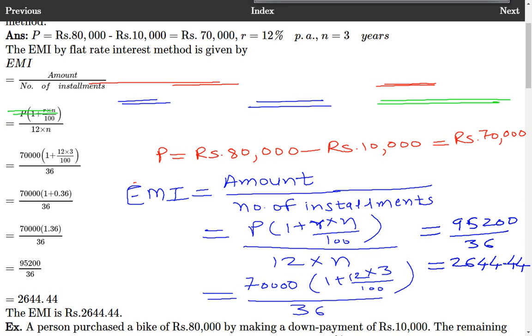I request you to do the calculations on your own. The final answer is EMI is Rs. 2,644.44.